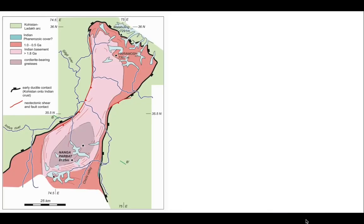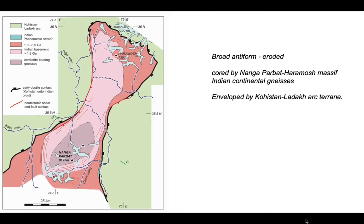We want to investigate the geological origins of that flood and the tectonics of the Nanga Parbat syntaxis, so we'll zoom into the map area. Overall, we have a broad antiformal structure with its axis running north-northeast to south-southwest, marked by those pink rocks — the rocks of the Nanga Parbat-Haramosh Massif, named after the two major peaks in the region. These comprise Indian continental gneisses — the Indian continental crust — forming the core of this broad antiform, which is enveloped by the structurally overlying Kohistan-Ladakh island arc terrain.